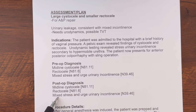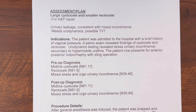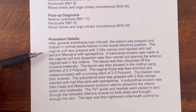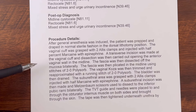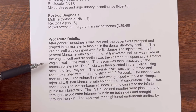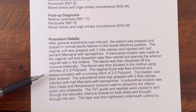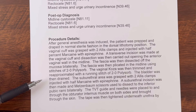So the midline cystocele and the rectocele will be our diagnosis for the vaginal repair, and then the mixed stress and urinary incontinence will be for our TVT, which is the sling operation. Now getting into our procedure details: after general anesthesia was induced, the patient was prepped and draped in normal sterile fashion in the dorsal lithotomy position. The vaginal cuff was grasped with two Allis clamps and injected with half percent Marcaine with epinephrine. A transverse incision was made at the vaginal cuff and dissection was carried out opening the anterior vaginal wall on the midline. The fascia was then dissected off the mucosa bilaterally, then plicated in the midline using stitches of 2-0 Polysorb. The vaginal mucosa was then trimmed and re-approximated with a running stitch of 2-0 Polysorb.